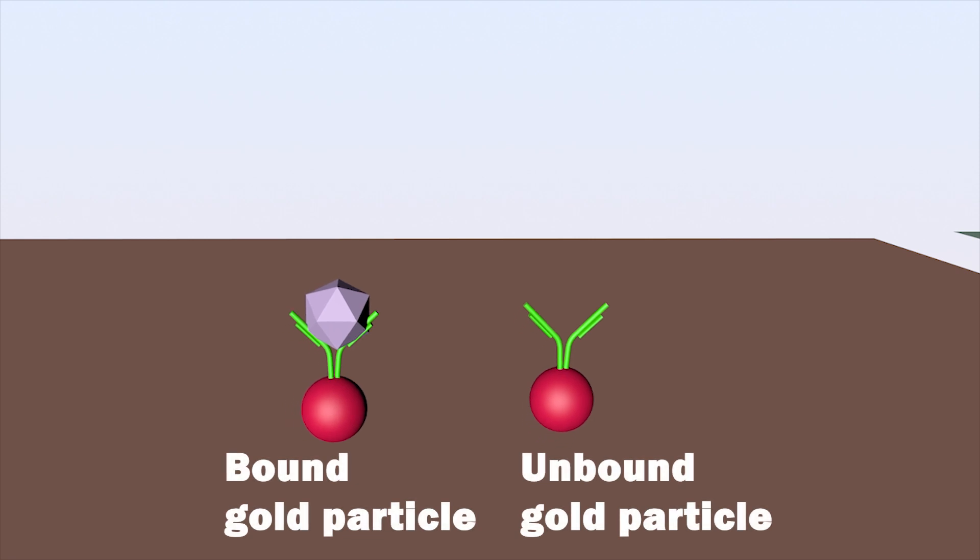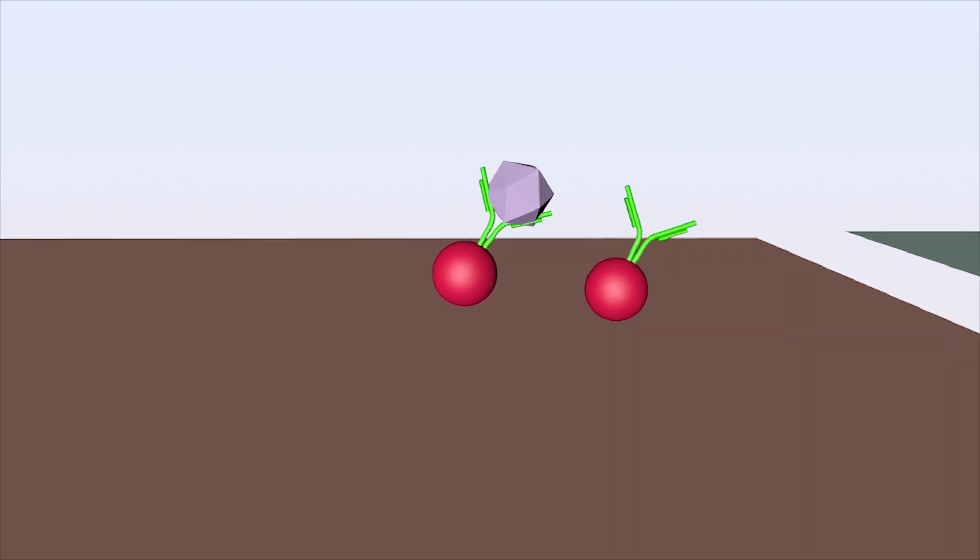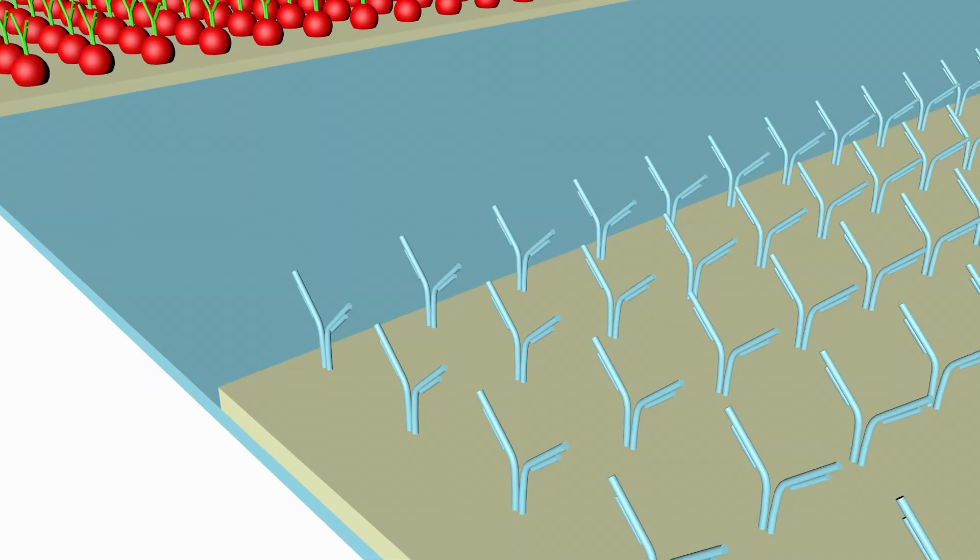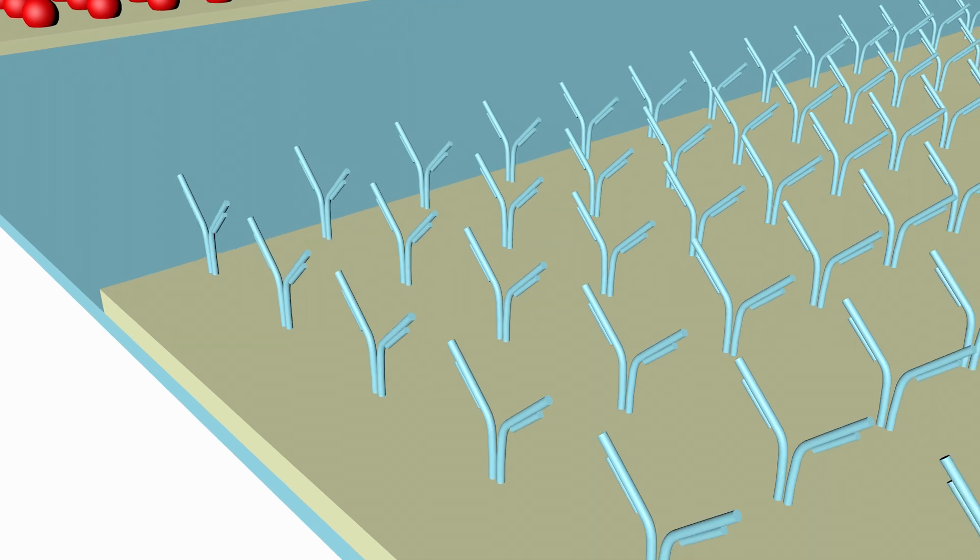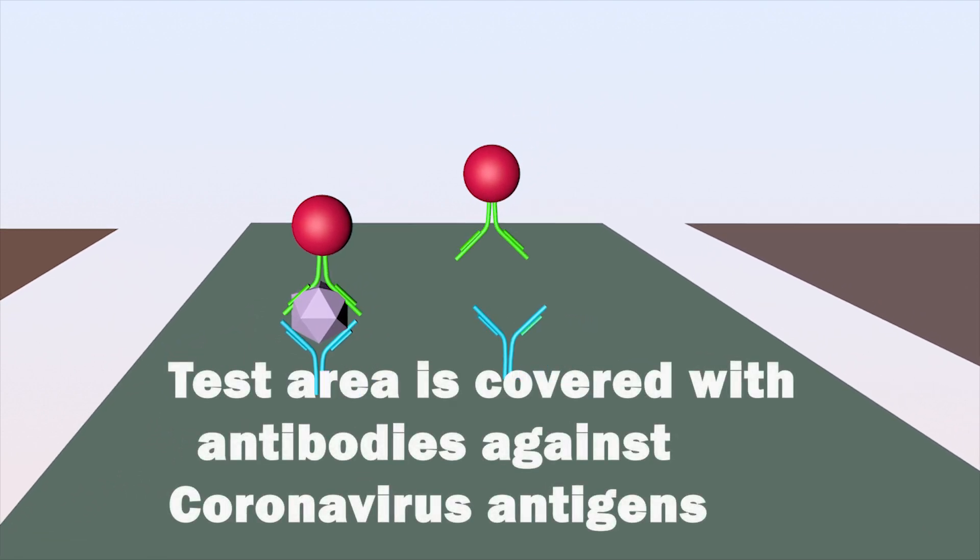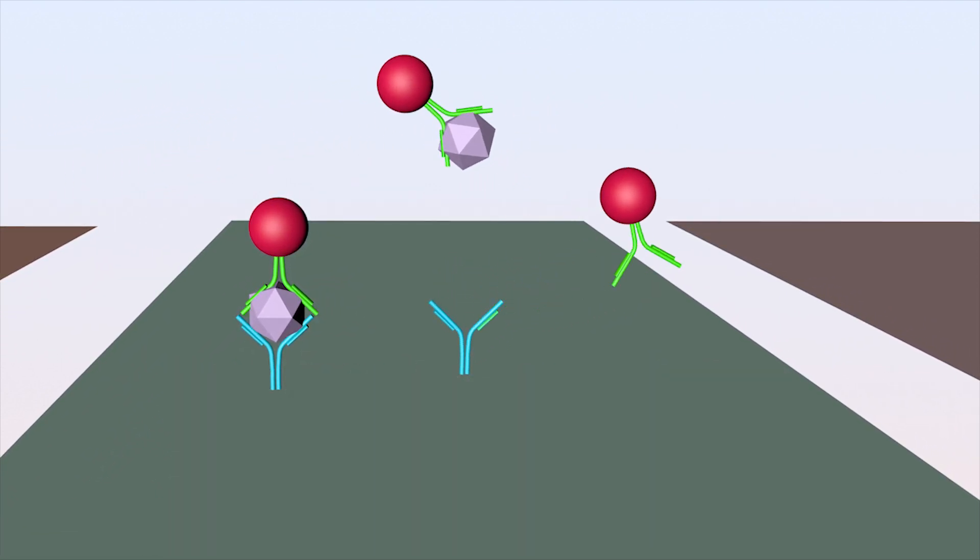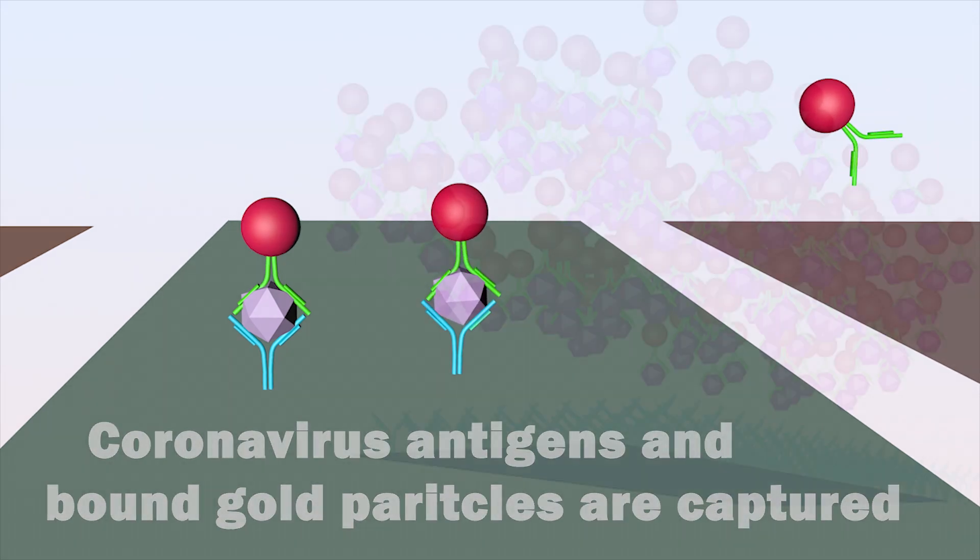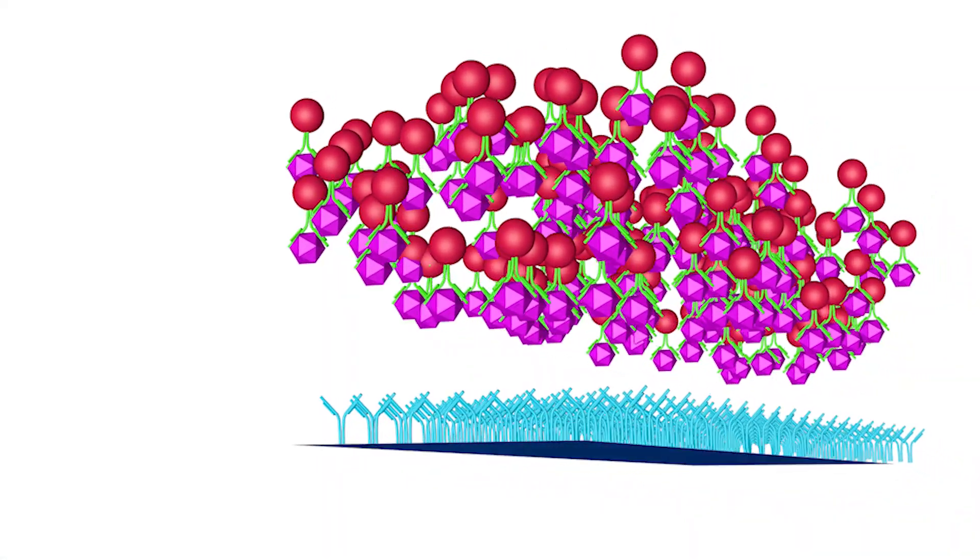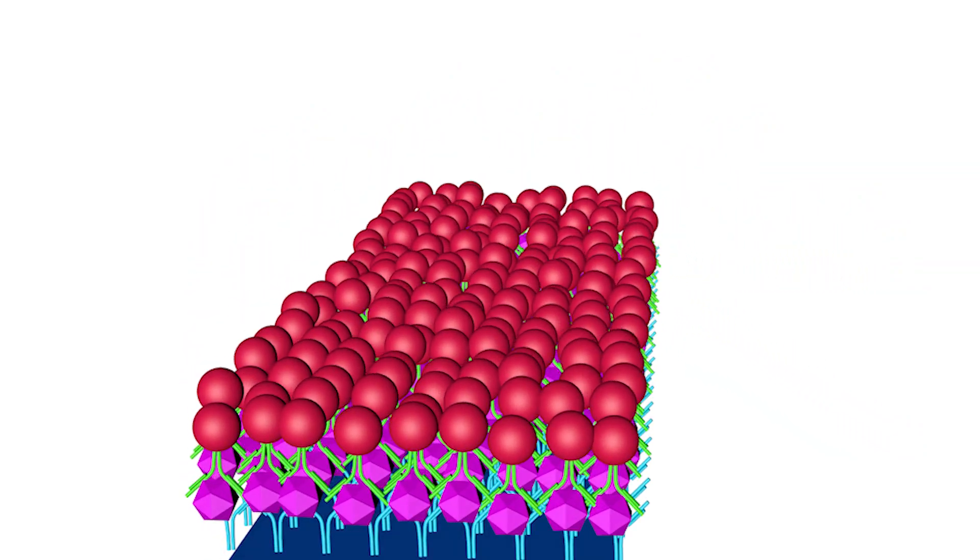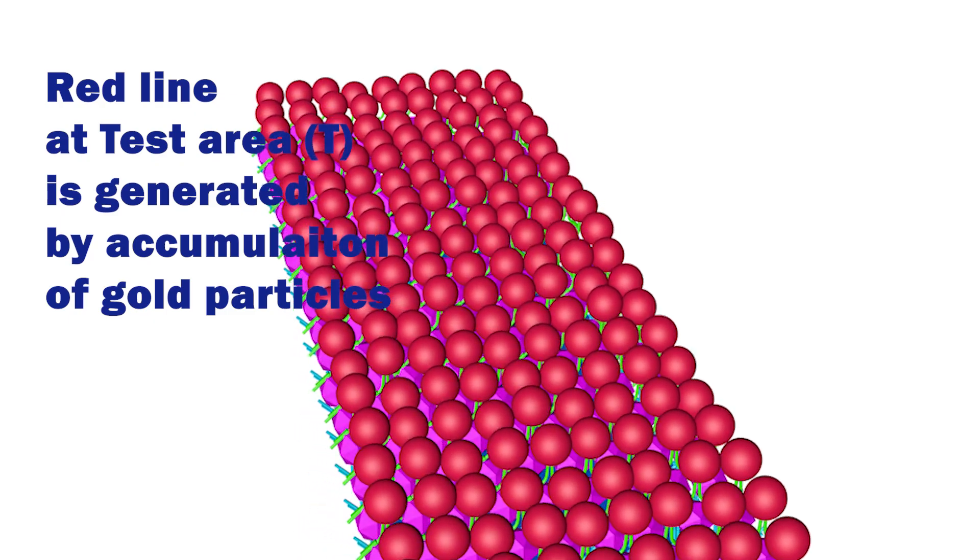The bound and unbound colloidal gold particles are then pulled into the test area by the suction force generated by the absorbent pad. The testing area is coated with two types of antibody molecules. The T-test area contains antibodies against the virus antigens. Here the nanoparticles bound to antigens are captured and fixed in place. As the nanoparticles accumulate, a visible red color line appears. This indicates the presence of coronavirus antigens, and we call this a positive test.